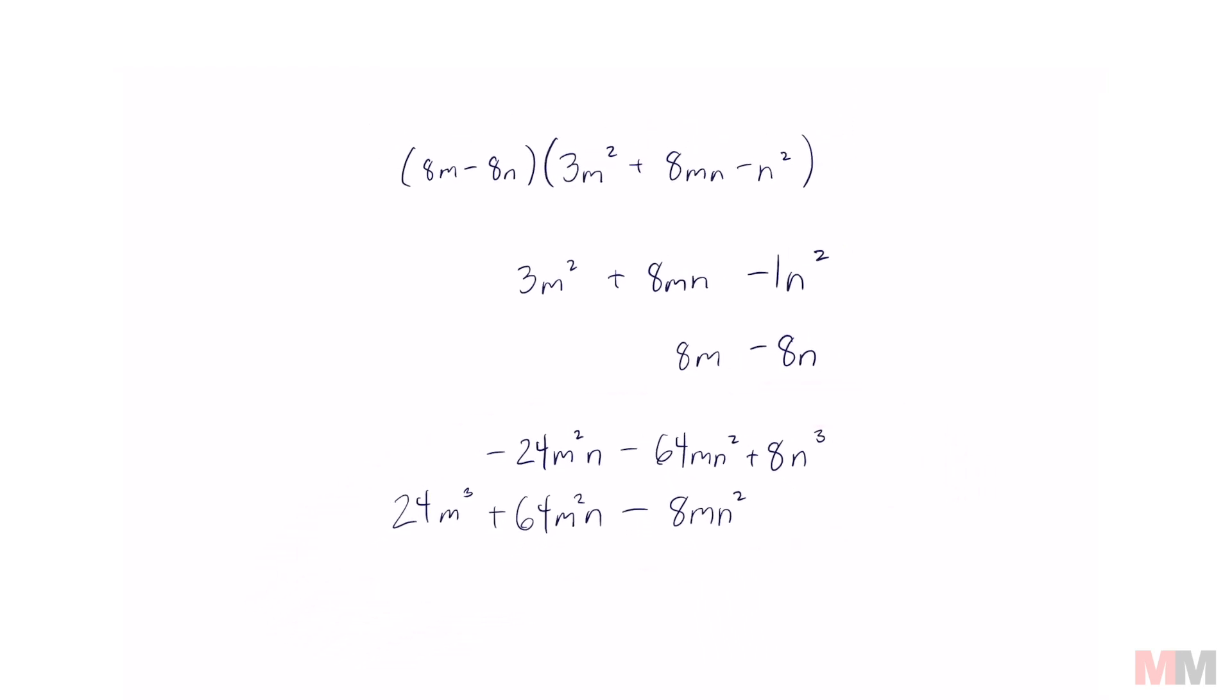Now this is nice and organized and all we got to do is combine like terms. And if there is nothing to combine it with, all you got to do is write it down. 8n to the third. This one is going to turn into negative 72mn squared. Negative 24 and a positive 64 is a positive 40m squared n. And 24m to the third is going to be by itself. So this is the simplified version.